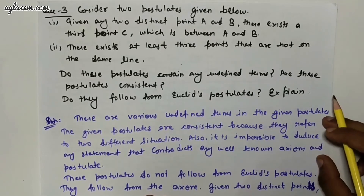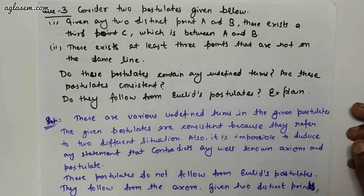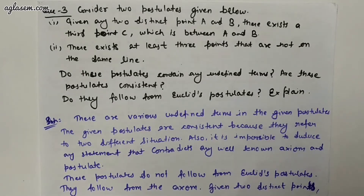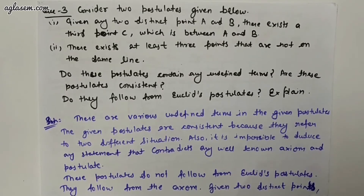First postulate: given any two distinct points A and B, there exists a third point C between A and B. Second postulate: there exist at least three points that are not on the same line. Do these postulates contain any undefined terms? Are these postulates consistent? Do they follow from Euclid's postulates? Explain.